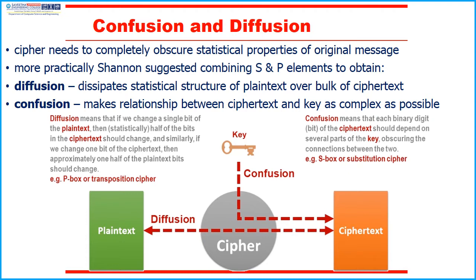Now we will see diffusion and confusion with the help of this picture. Diffusion means that if we change a single bit of a plain text, then half of the bits in the ciphertext should get changed. Similarly, if we change one bit of the ciphertext, then approximately one half of the plaintext bits should get changed. Confusion means that each binary digit of the ciphertext should depend on several parts of the key, obscuring the connections between the two.